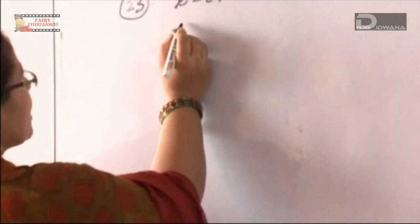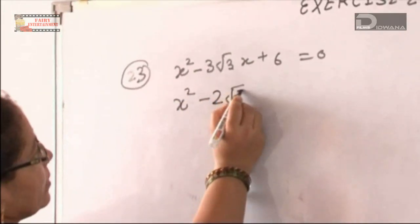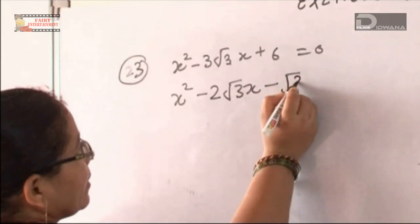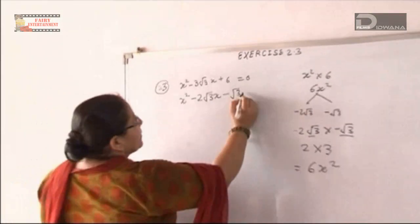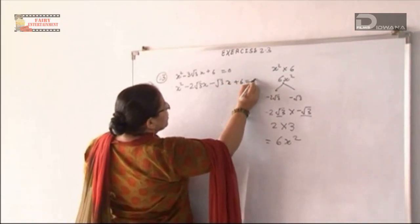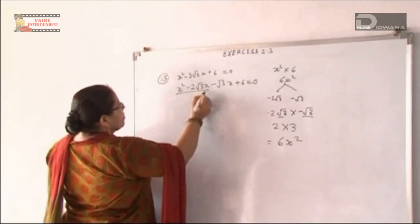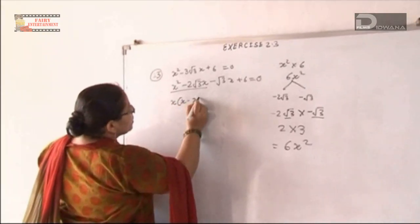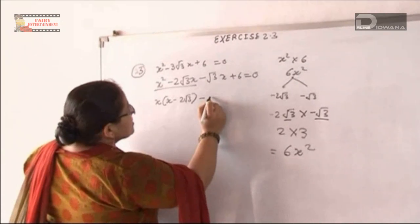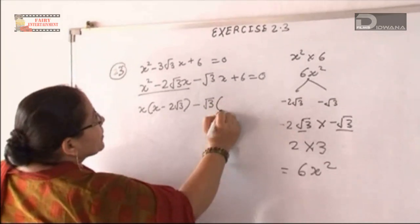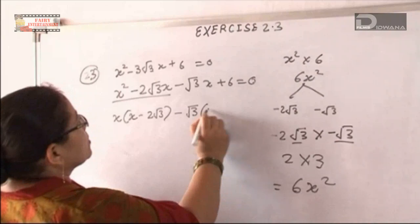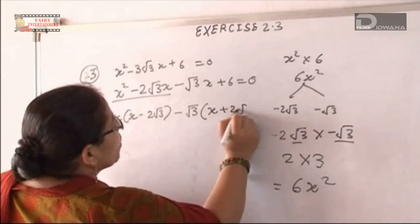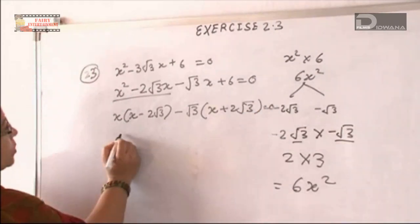So we will make the factor x² - 2√3x - √3x + 6 = 0. We will take x common. So x(x - 2√3) - √3(x - 2√3) = 0.